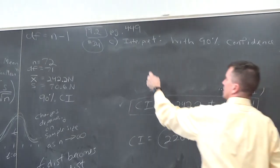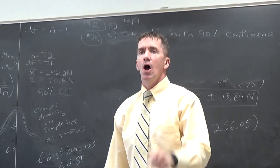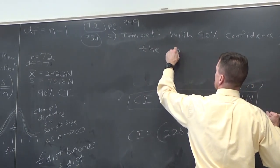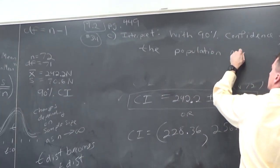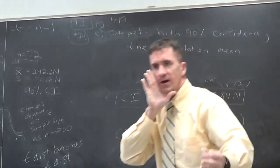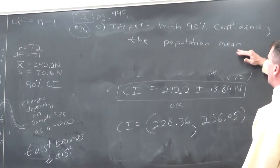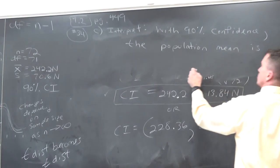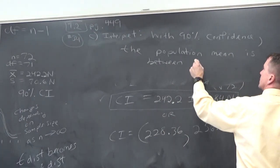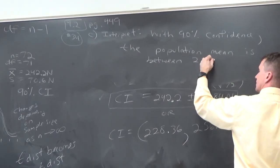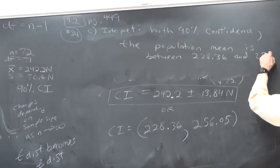With 90% confidence, the mean. Good. Is it a sample mean or population? Population mean. The population mean tensile strength of the cement is between 228.36 and 256.05.